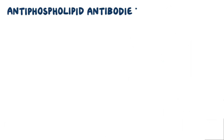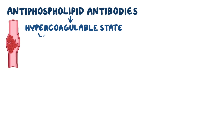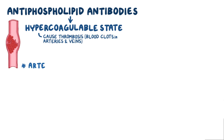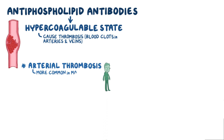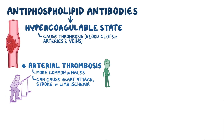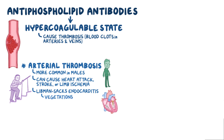The antiphospholipid antibodies lead to a hypercoagulable state, meaning that they cause thrombosis or blood clots to form within arteries and veins. Arterial thrombosis is more common in males, and can cause a heart attack, stroke, or limb ischemia. In addition, individuals might develop Libman-Sacks endocarditis, which is where vegetations form — a mixture of immune cells and blood clots — usually on the mitral valve.